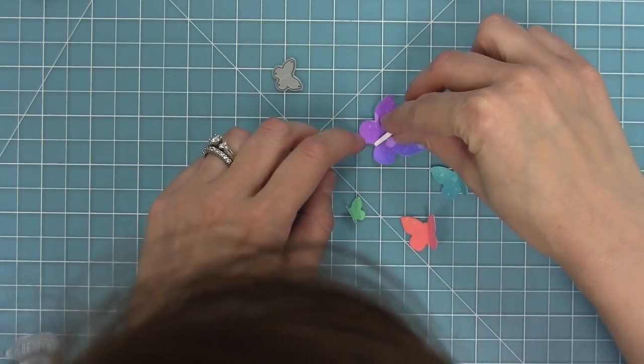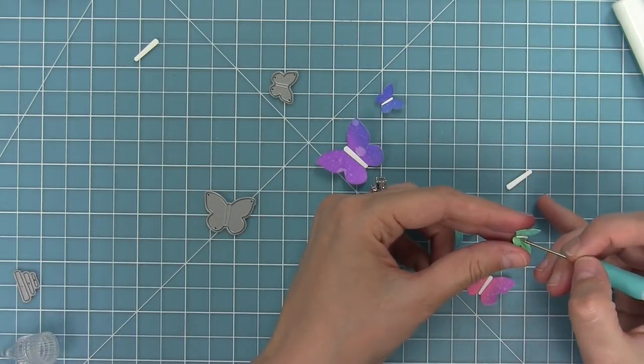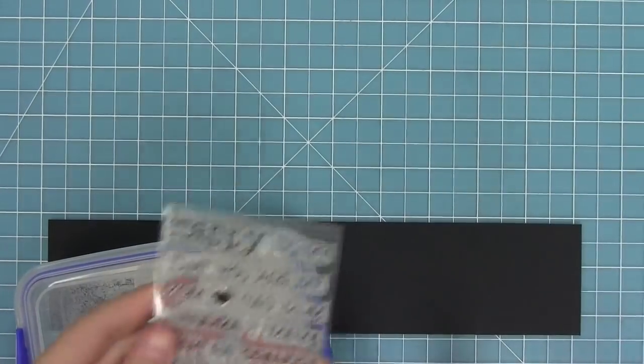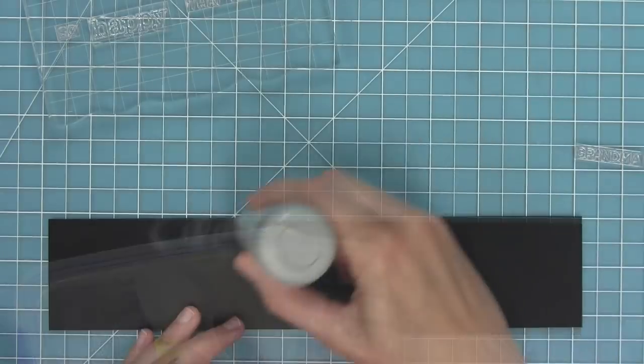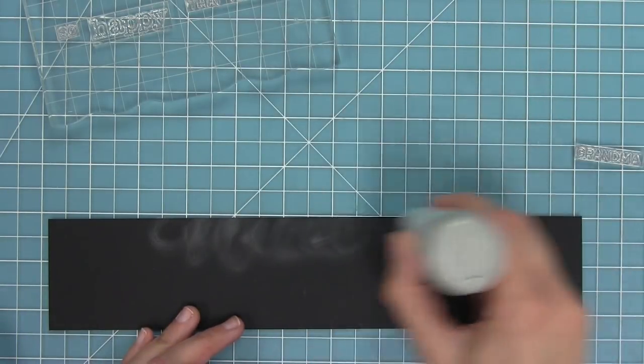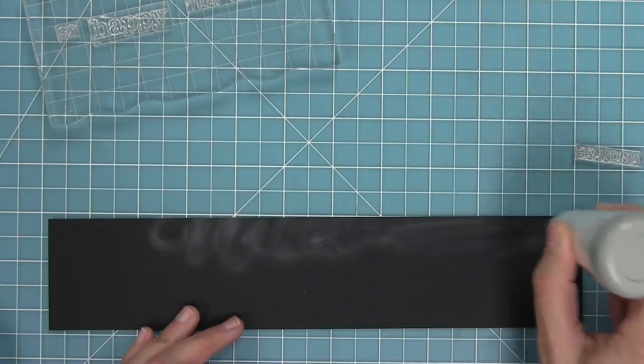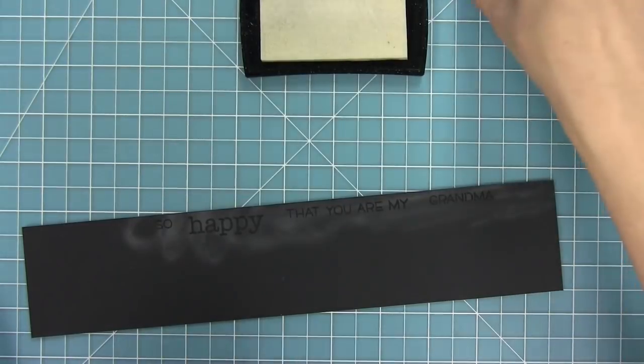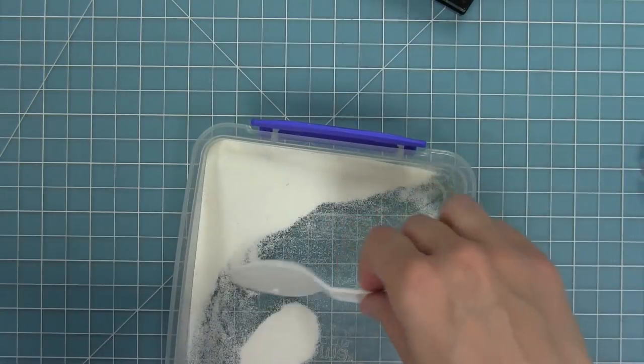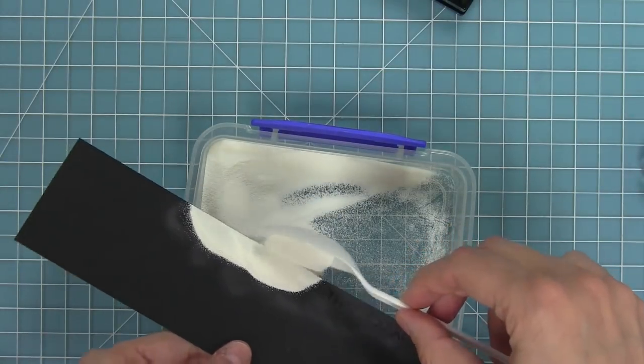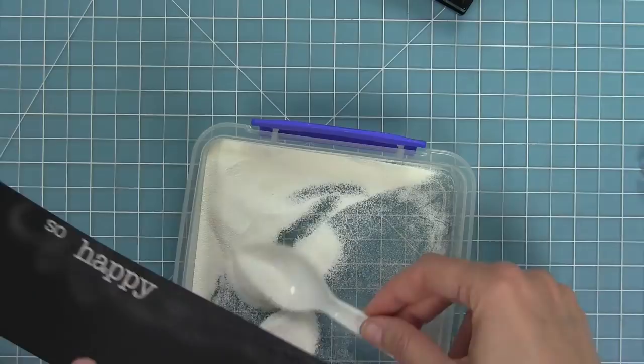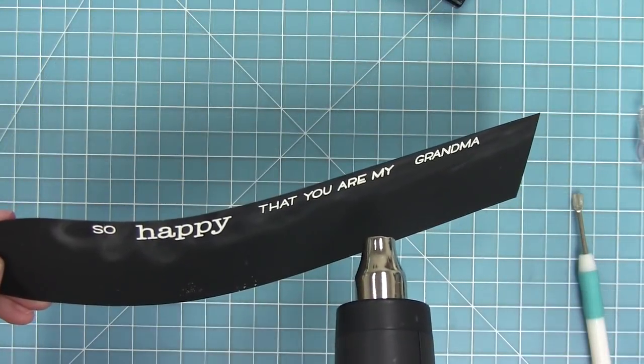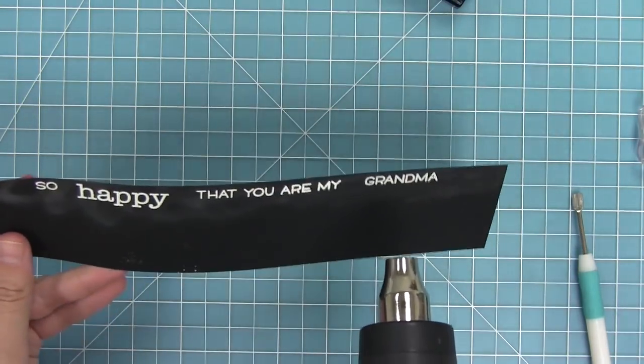Next up I'm going to be using the new happy happy happy family add-on. This is a great addition to our happy happy happy sentiment set where you can put all of your different relatives names. We have like mom, mama, nana, grandma, grandpa, daughter, sister, things like that. In this case I'm going to make a card for my grandmother since Mother's Day is coming up. I've got some black cardstock here and I use my anti-static tool to make sure that my embossing powder is only going to stamp to my Versamark ink that I've stamped my sentiment with. Then I'm going to add my white heat embossing powder to this sentiment and then heat it up with my gun.